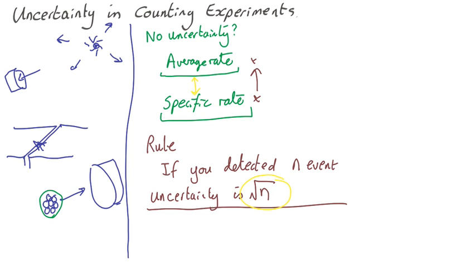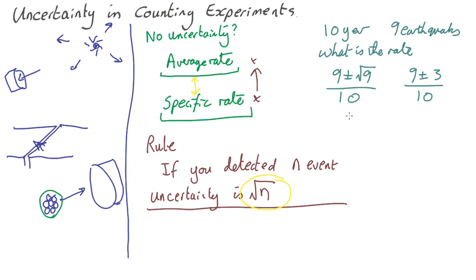So let's look at it in an example. Let's say you had a ten-year period. You measured nine earthquakes. What is the rate? Well, it's nine plus or minus root nine per ten years. So that's nine plus or minus three over ten. So the rate is 0.9 plus or minus 0.3.